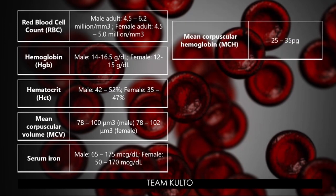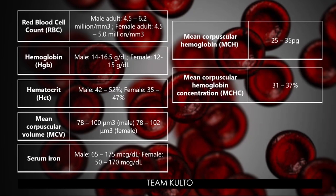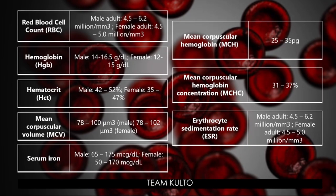Mean corpuscular hemoglobin, MCH: 25 to 35 picograms (PG). Mean corpuscular hemoglobin concentration, MCHC: 31 to 37%. Erythrocyte sedimentation rate, ESR — we see this value frequently in the ward. For male adults: 4.5 to 6.2 million per cubic millimeter. For female adults: 4.5 to 5 million per cubic millimeter. These are your erythrocyte studies — take a screenshot, and if you missed anything, replay the video.